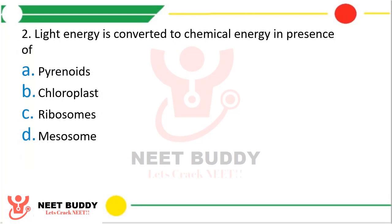Question 2. Light energy is converted to chemical energy in the presence of which of the following — option A: Pyrenoids, option B: Chloroplast, option C: Ribosomes, or option D: Mesosomes? The correct answer is option B, that is chloroplast.